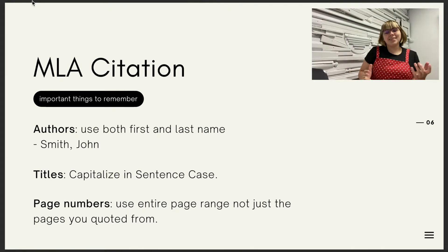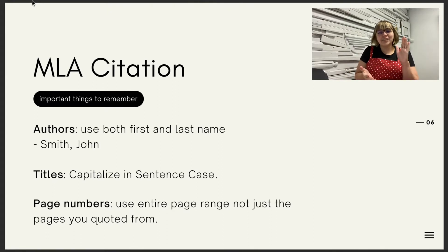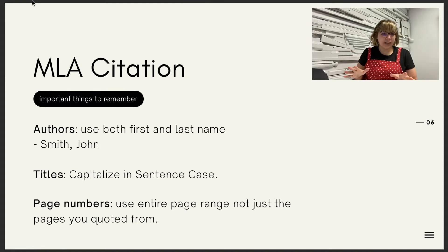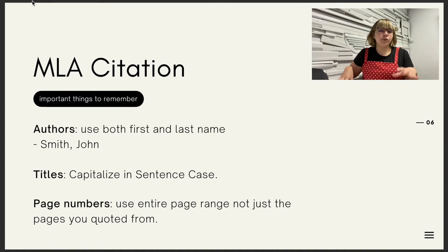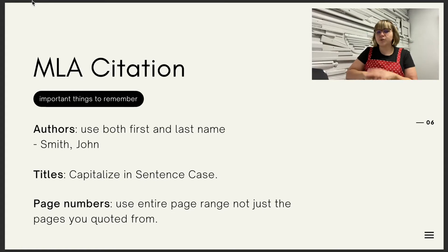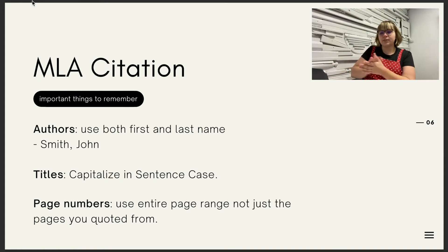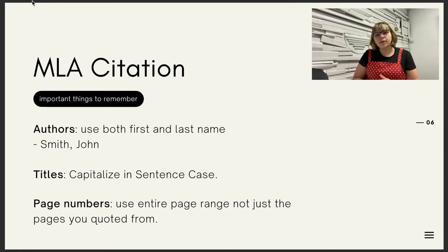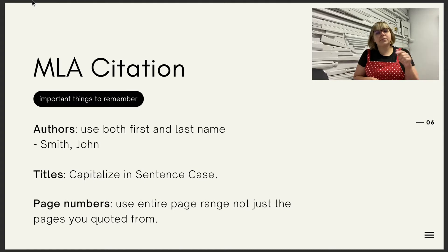So three key things to remember about MLA citation style. First is authors — this is different from certain other styles. When listing the name of the author, you want to put the full last name and the full first name; you don't want to use just an initial for the first name. For example: Smith, John — you want the full name, not Smith, J.